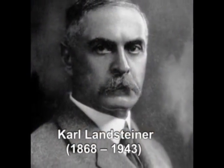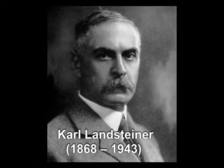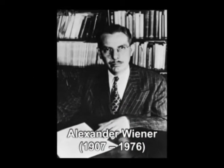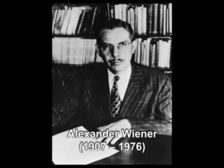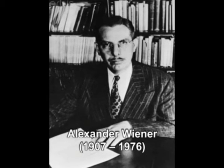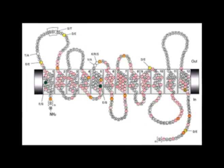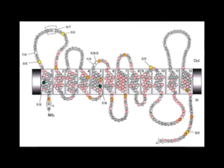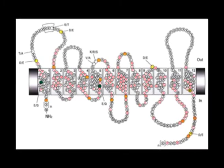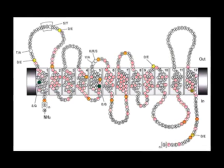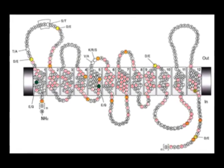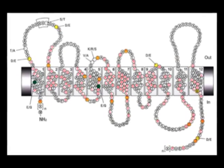The RH blood types were discovered by Karl Landsteiner and Alexander Weiner in 1940, which was 40 years after Landsteiner had discovered the ABO blood groups. Over the last half century, we have learned far more about the processes responsible for RH types. This blood group may be the most complex genetically of all blood type systems, since it involves 45 different antigens on the surface of red cells that are controlled by two closely linked genes on chromosome number 1.